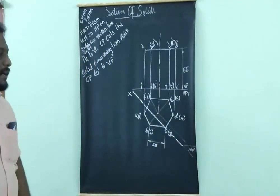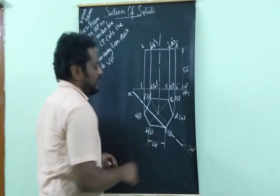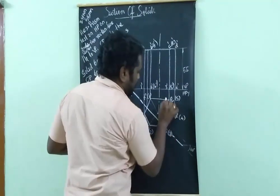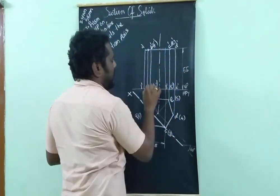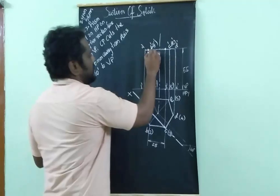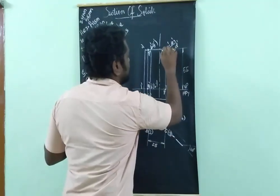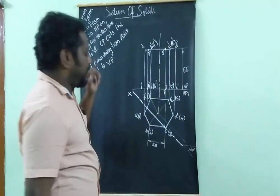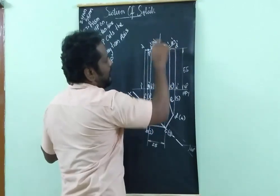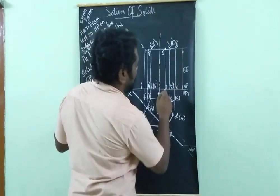This is your cutting plane. It cuts the solid at two locations. Draw an external line and project upward — you will get four cutting points. Name them P dash, Q dash, R dash, and S dash. From the top view, point P is visible, Q is invisible. Point S is visible, and point R is invisible.